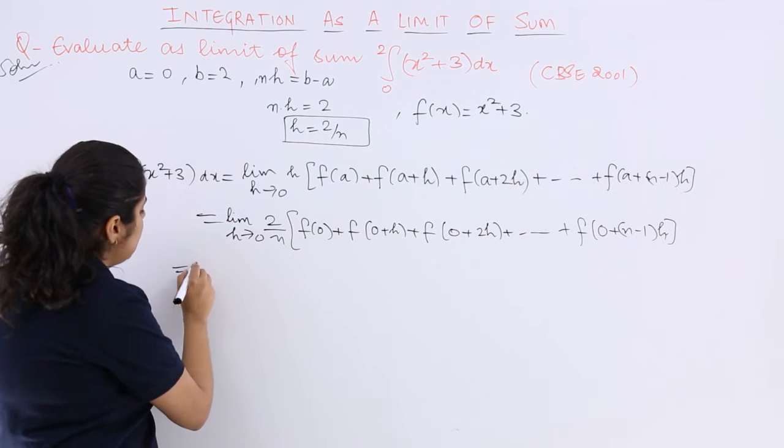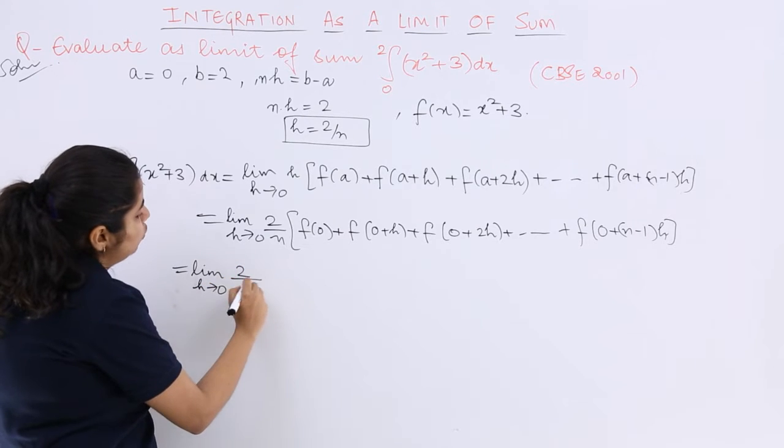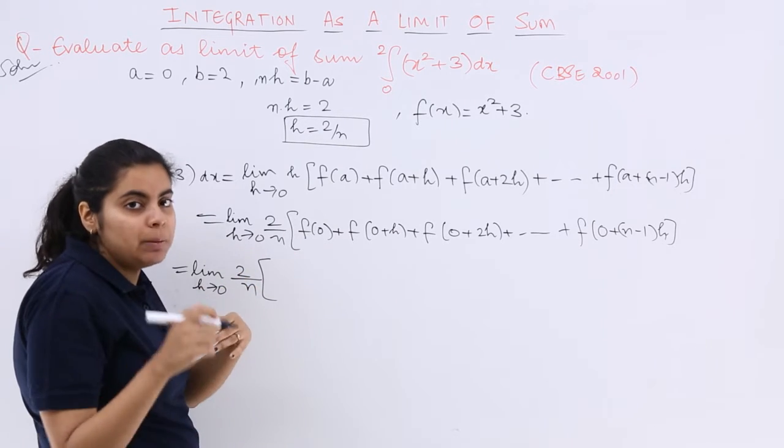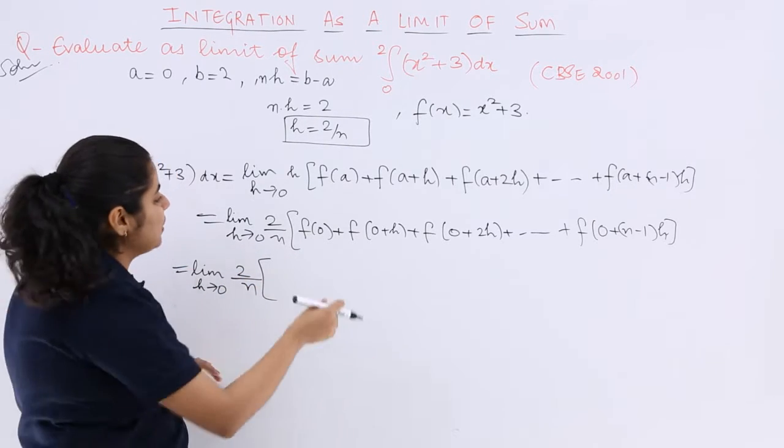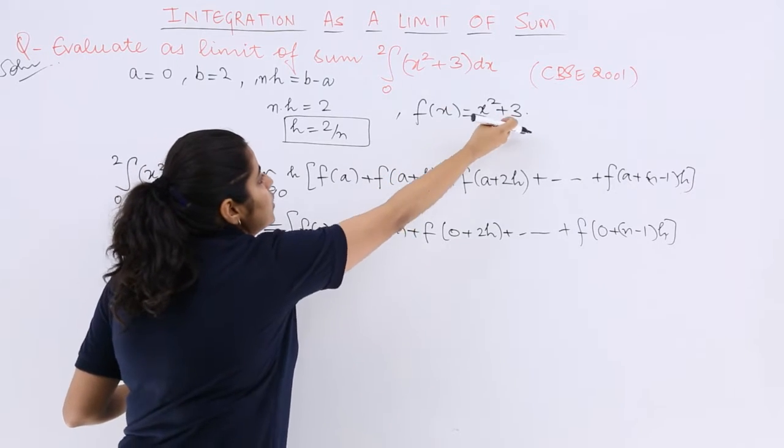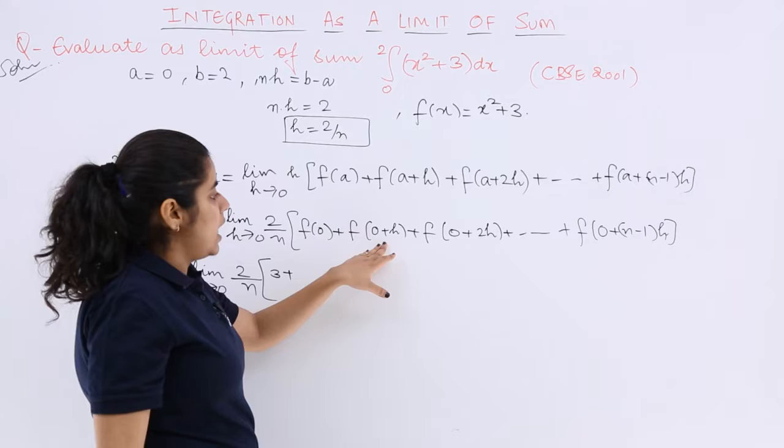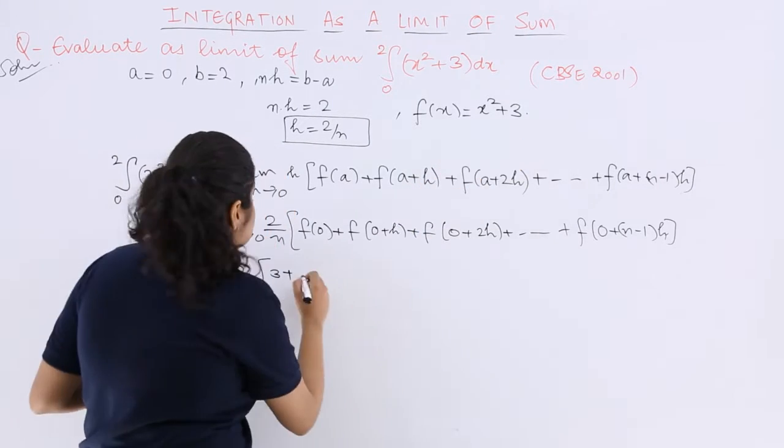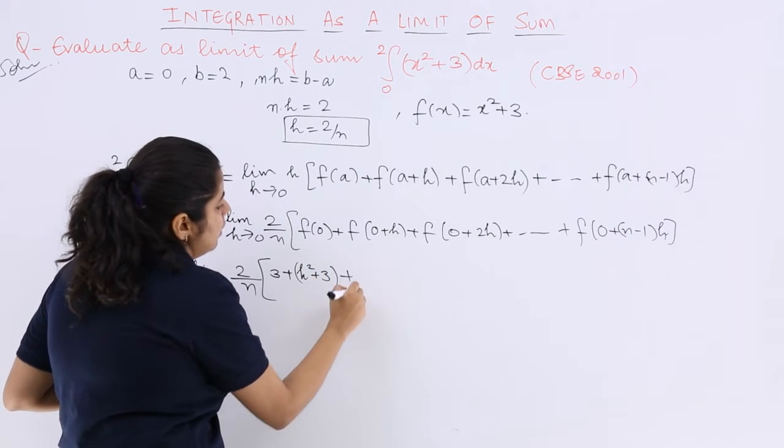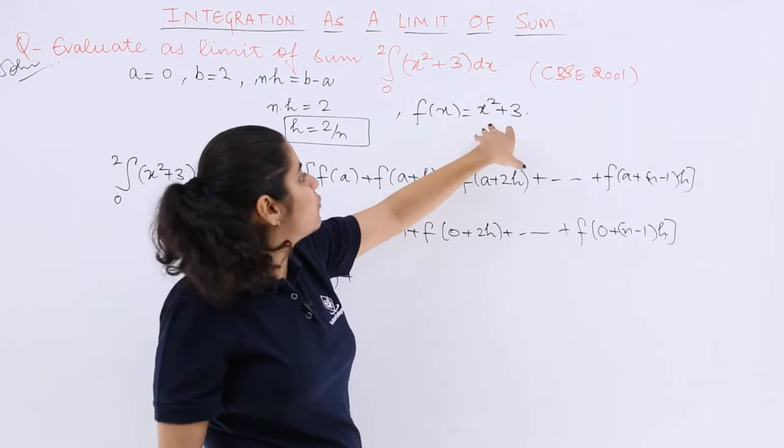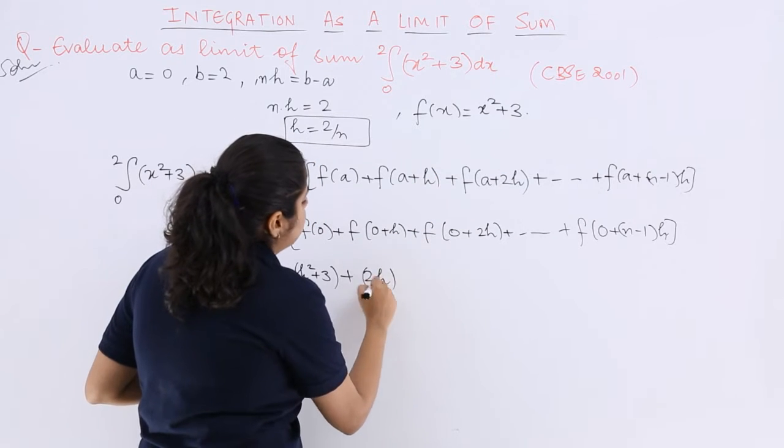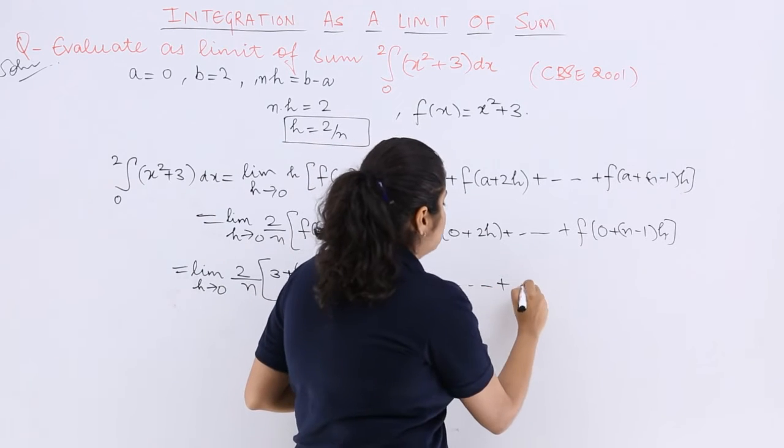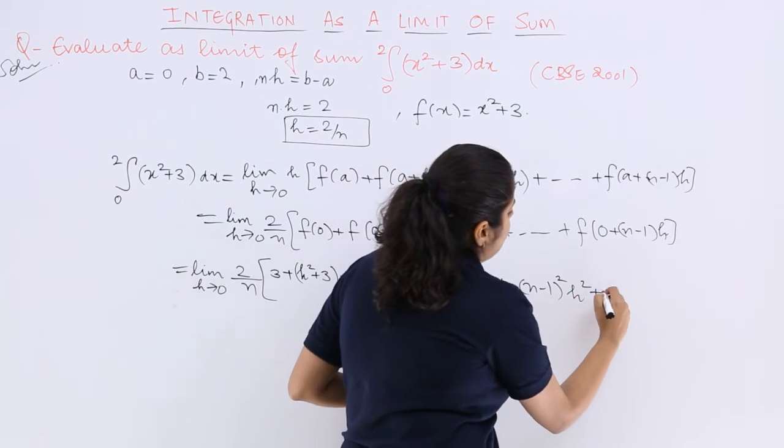The next step should be limit H tends to 0, 2 upon N as it is. Please do not make a mistake while understanding N and H. Now F of 0 means here you put 0: 0 plus 3 is 3, plus F of H means H square plus 3, plus F of 2H means 2H whole square plus 3, and so on till the end, which is N minus 1 square H square plus 3.